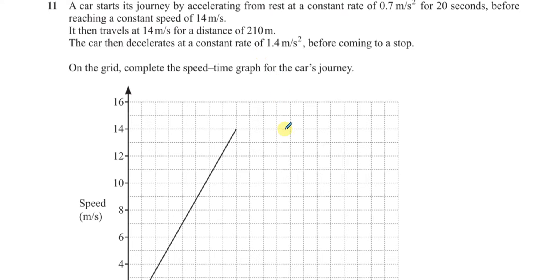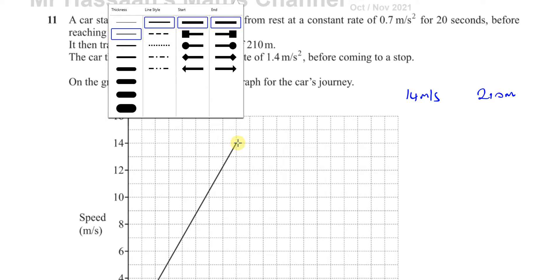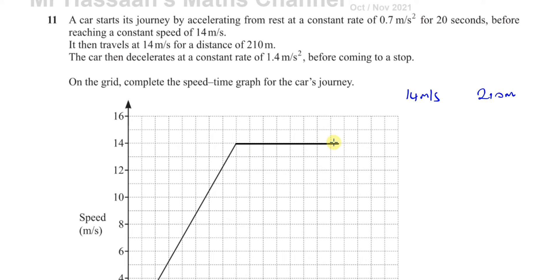It then travels at 14 meters per second for a distance of 210 meters, so it's going at constant speed for a certain amount of time which we have to calculate. Then it decelerates at a constant rate of 1.4 meters per second squared before coming to a stop. We need to complete the speed-time graph. For the constant speed section, we'll have a straight horizontal line — we just need to work out how far across it goes.